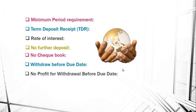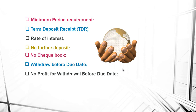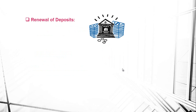Next is no profit for withdrawal before the due date: if the customer withdraws before six months, no profit will be given by the bank, and moreover the account holder has to share the loss of the bank. Regarding renewal of deposits: at the time of maturity the customer has the right to either withdraw his money and profit or to renew it for the next year. Next is payment order: profit is paid to the customer by payment order, and it can be credited to the customer's account by using a pay-in slip.